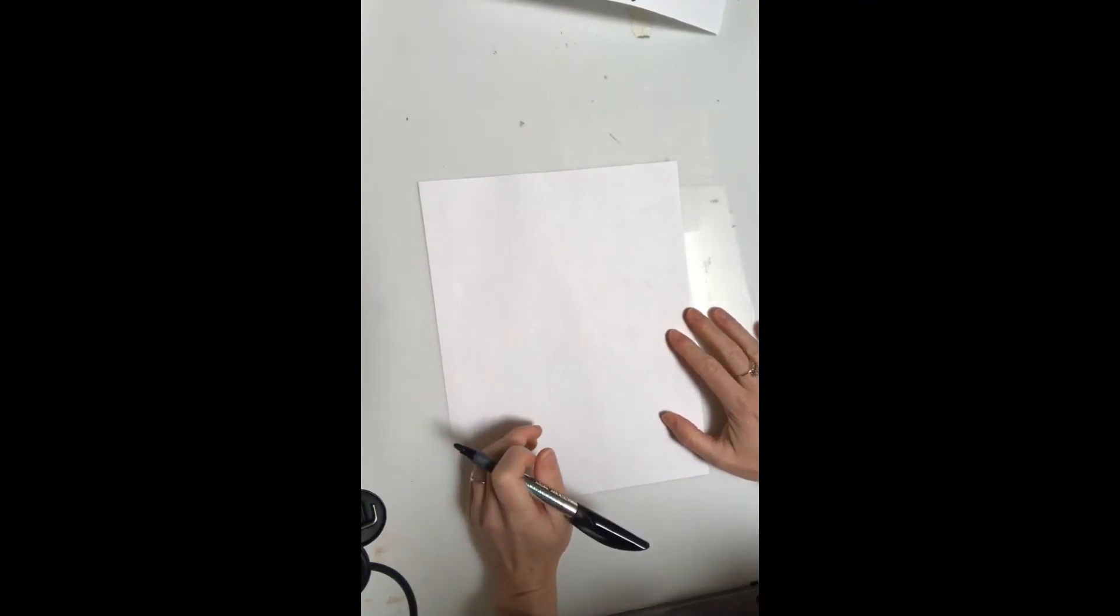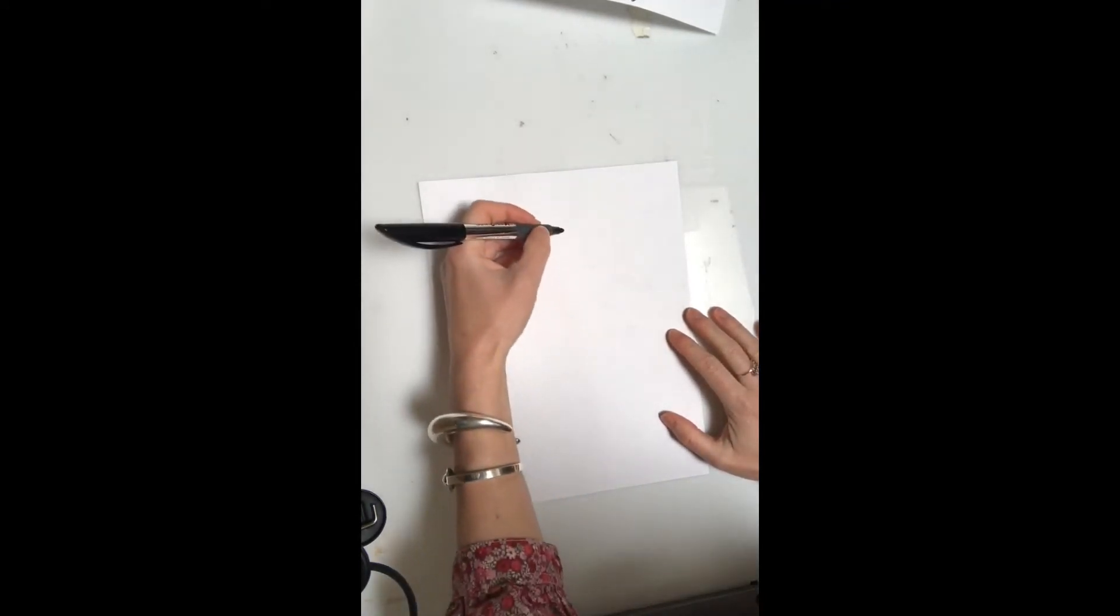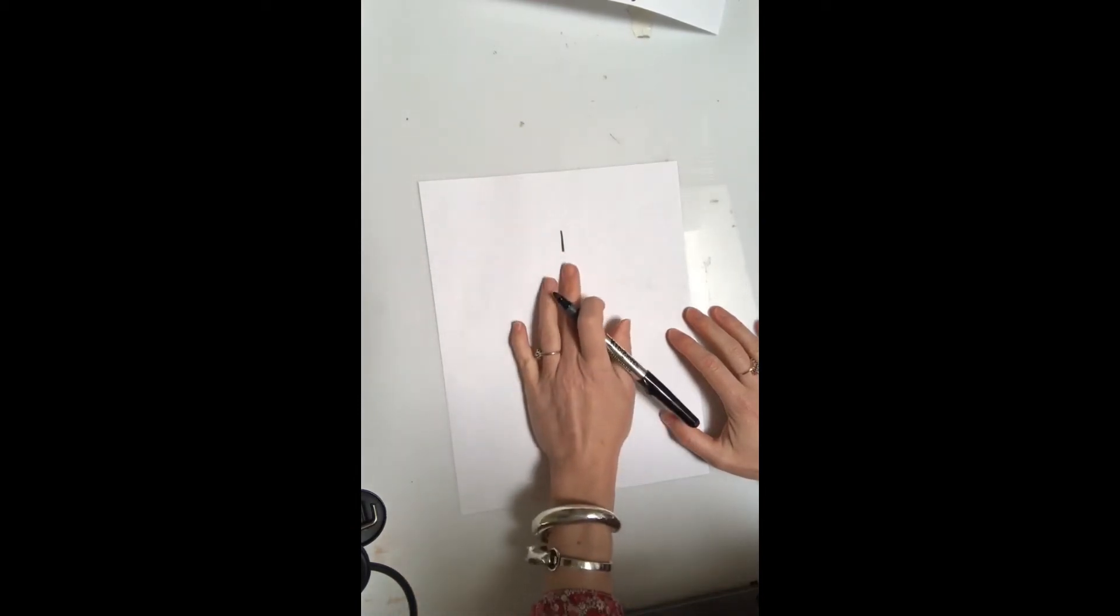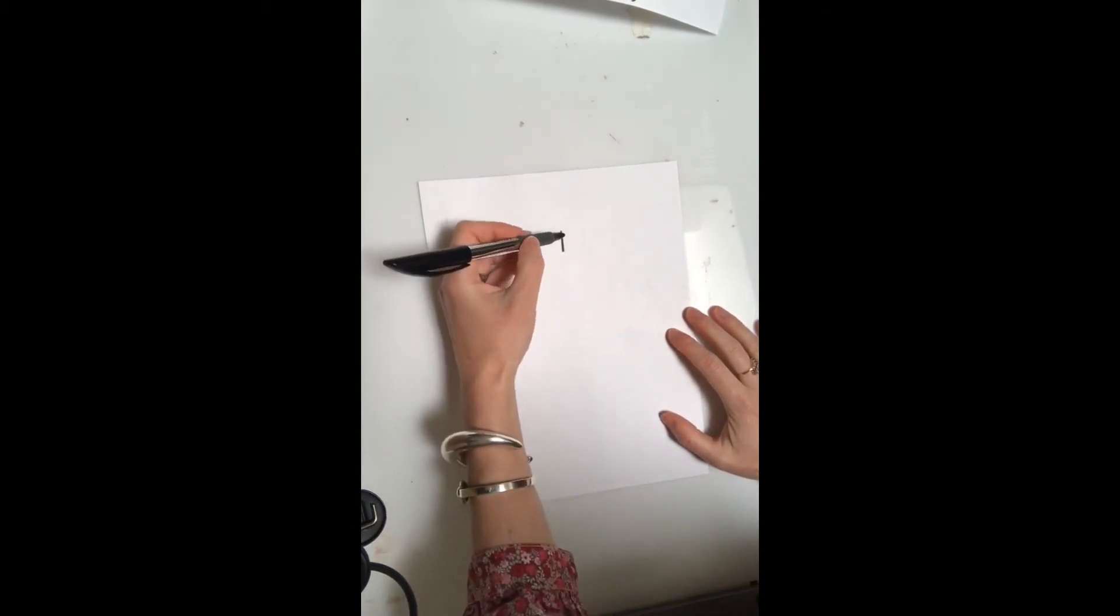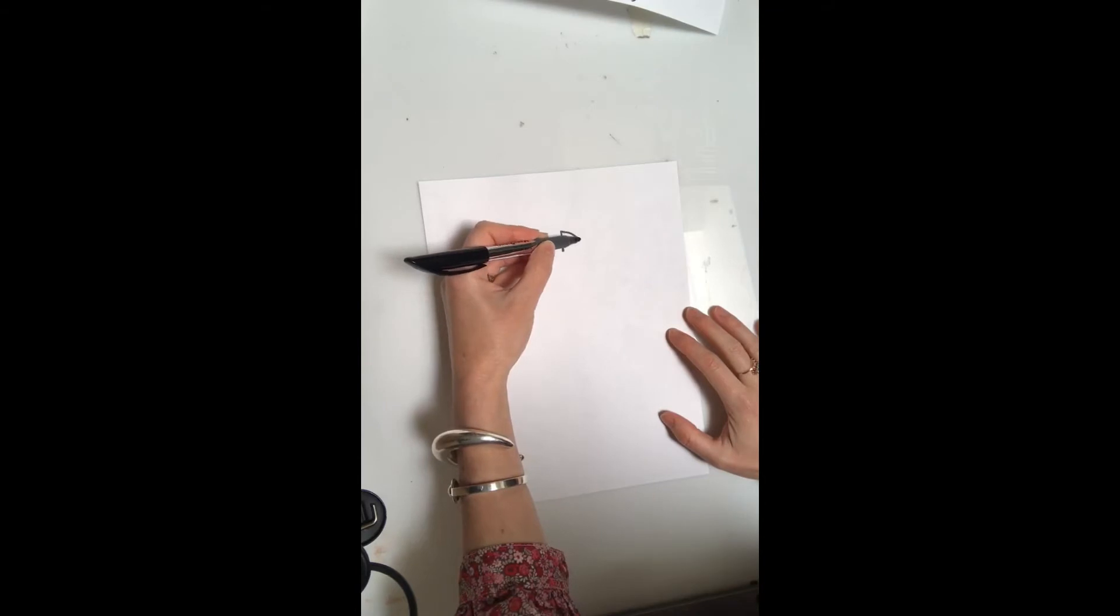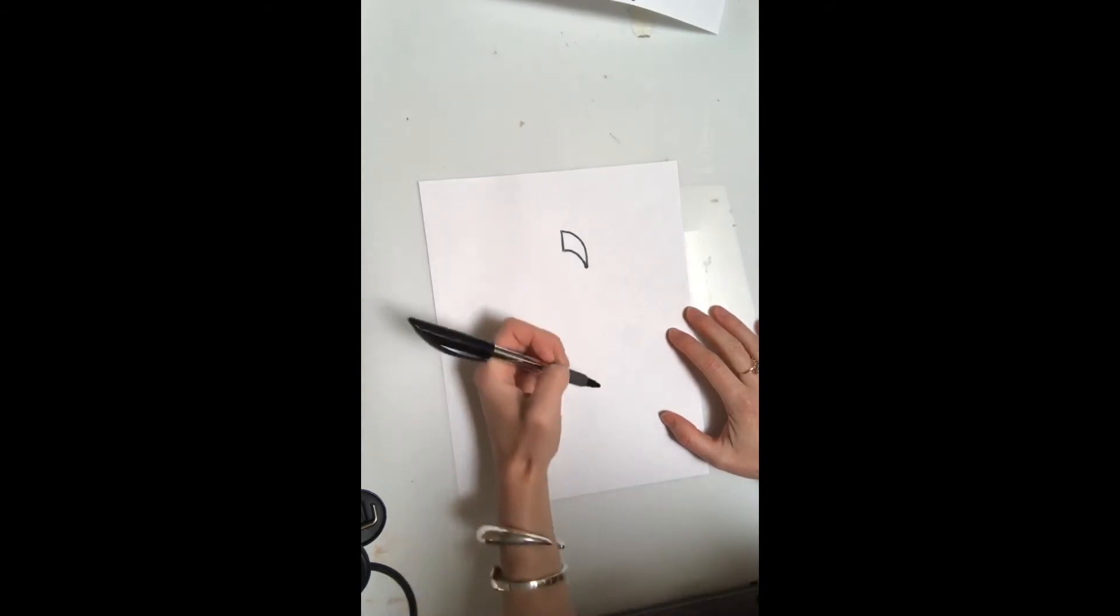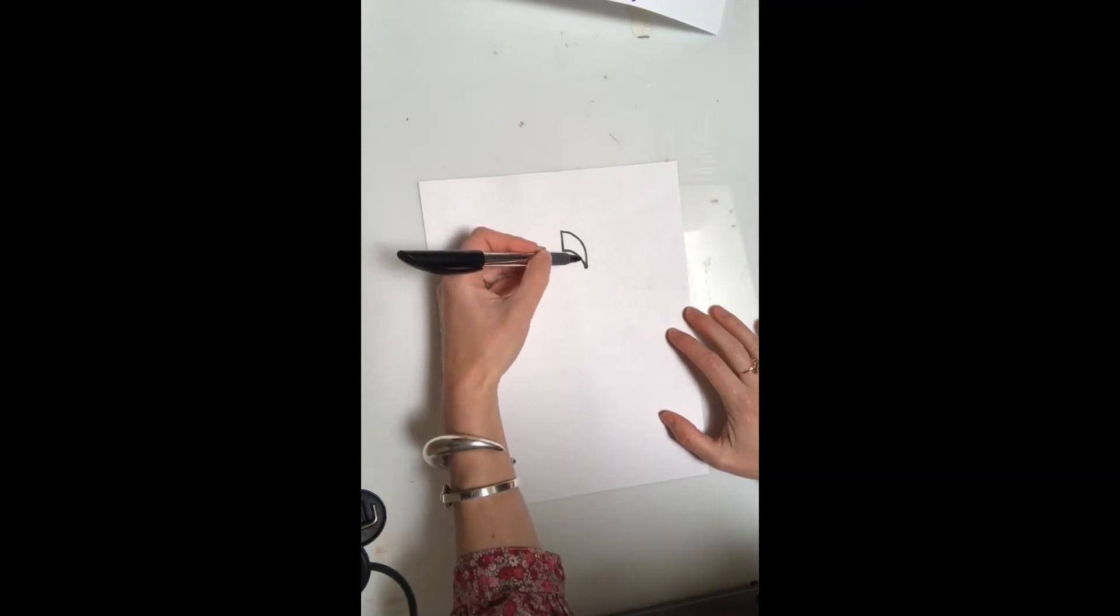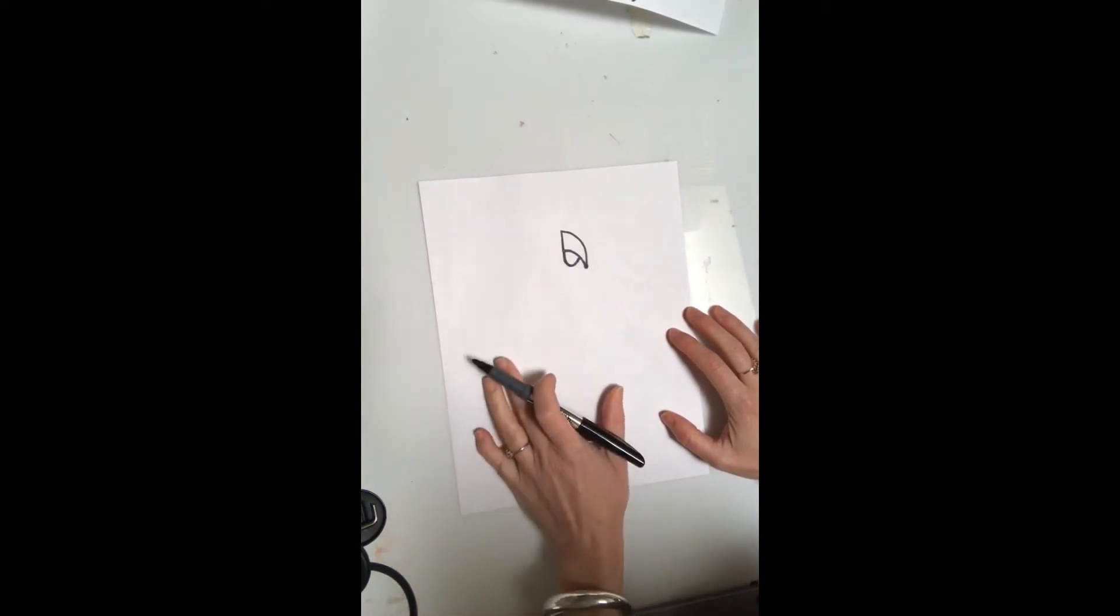I like to start with the beak because the beak is really important on the parrot. I'm starting with a straight line and then I'm going to make a hook shape for the top beak. The bottom part of the beak is just kind of rounded and that's the first part.